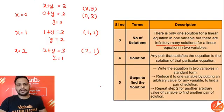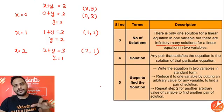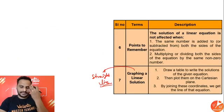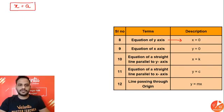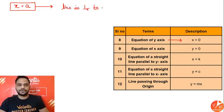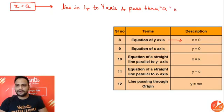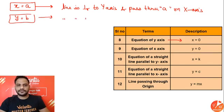To find a solution, assume any value for one variable, substitute it into the equation, and solve for the other variable. Regarding equations of axes: if a line's equation is x = a (a constant), the line is perpendicular to the x-axis — it is a vertical line passing through point a on the x-axis. The equation of the y-axis is x = 0.